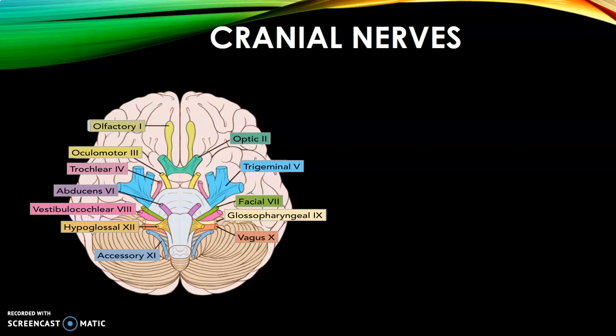Trigeminal, number five, covers three nerves: mandibular, facial area, and eyebrow region. Abducens controls lateral eye movement. Facial nerve — the best assessment is to ask the patient to smile. Vestibulocochlear, number eight, is also known as the acoustic nerve, responsible for hearing. Glossopharyngeal, number nine — check for gag reflex. Vagus, number ten, is connected to the heart — the vagus nerve response. Accessory, number eleven, controls the sternocleidomastoid and shoulder muscle movement — more motor. Hypoglossal, number twelve, controls movement of the tongue.